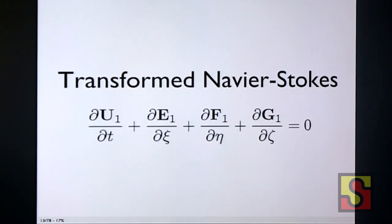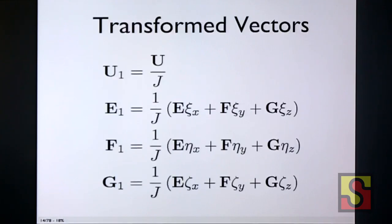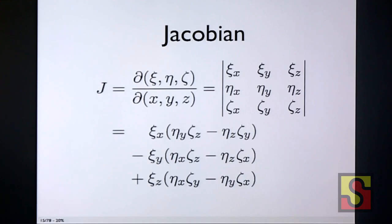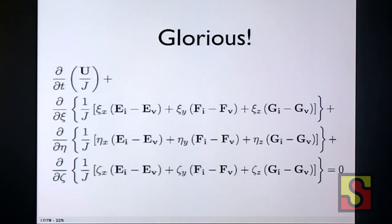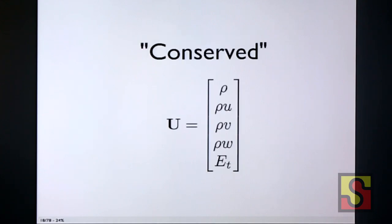So our Navier-Stokes equations have been transformed into this. We take those four vectors at the top. Remember, they're bold, so they're vectors. And we transform them through this transformation. So we have xi, eta, zeta, x, y, z, and this new thing called j. j is the Jacobian, which is the determinant of the partial derivative matrix. And ef and g will split into two different parts, the inviscid part and the viscous part. And now we have this glorious expanded equation.